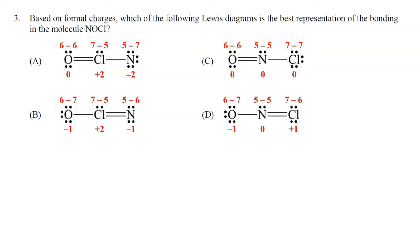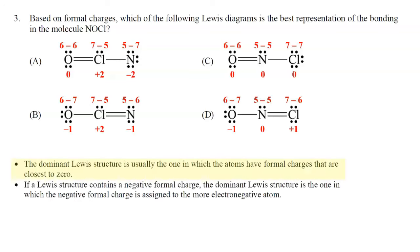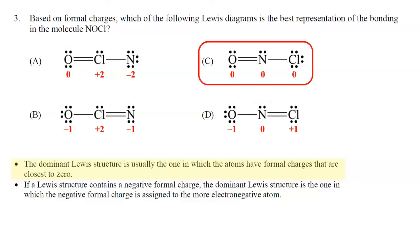One of the guidelines for formal charges says that the dominant or most preferred Lewis structure is the one in which the atoms have formal charges closest to 0. There is another rule about electronegativity that we'll see in question 4, but for question 3, looking at that first rule, choice C has all formal charges of zero. That makes choice C the correct answer to question 3.